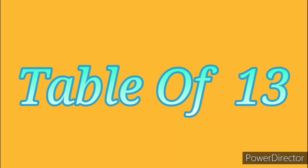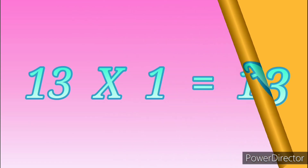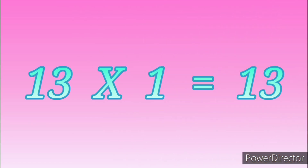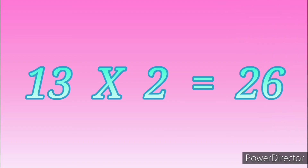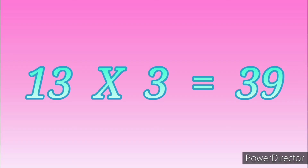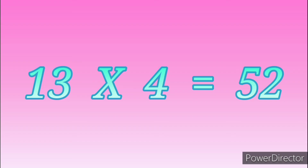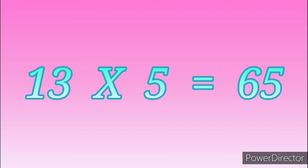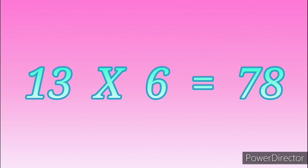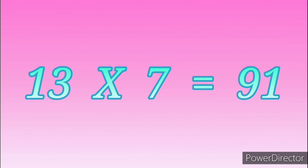Table of Thirteen. Thirteen ones are thirteen. Thirteen twos are twenty-six. Thirteen threes are thirty-nine. Thirteen fours are fifty-two. Thirteen fives are sixty-five. Thirteen sixes are seventy-eight. Thirteen sevens are ninety-one.